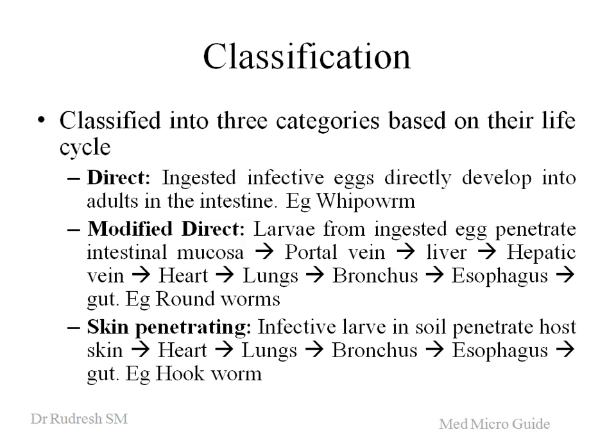Before the egg becomes infective, the eggs have to go through certain steps of maturation in the soil. Once they are ingested directly, the larvae are hatched in the intestine and they become adult forms. An example is the whipworm.